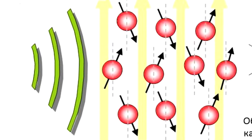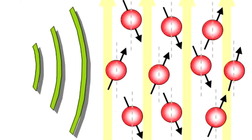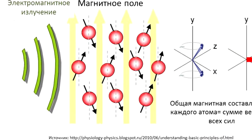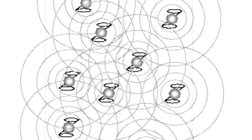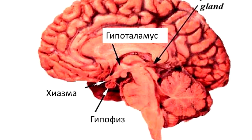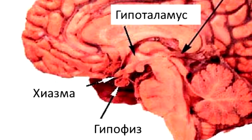If atoms in a magnetic field are exposed to electromagnetic radiation perpendicular to the vector of magnetic field action, then they will begin to deviate from the vector of the magnetic field, and thus, when the effect of electromagnetic radiation ceases, excess energy will be released. The energy emitted by atoms after exposure to electromagnetic radiation is captured by a tomograph, after which an image is formed.